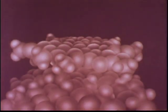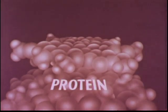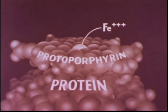This representation shows that peroxidase has a complex structure. The largest part is a protein. Attached to the protein is a flat portion, called a protoporphyrin. And in the center of the flat surface is a ferric ion.